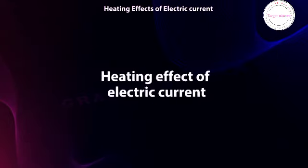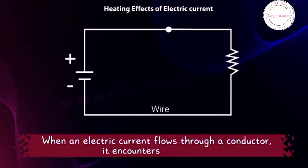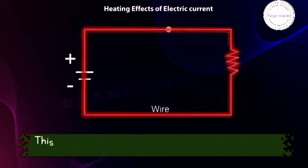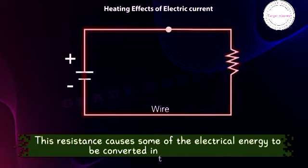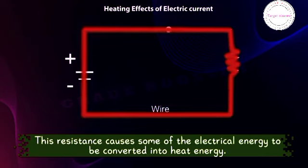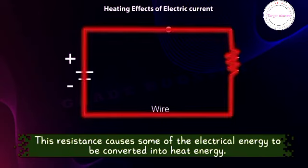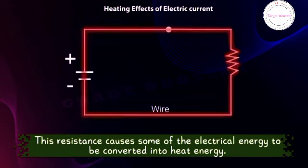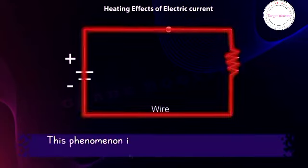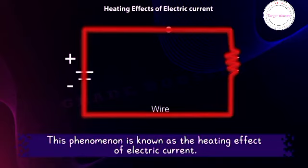Heating effect of electric current: when an electric current flows through a conductor, it encounters resistance. This resistance causes some of the electrical energy to be converted into heat energy. Due to resistance in a circuit, a certain amount of electric energy is converted to heat energy. This phenomenon is known as the heating effect of electric current.